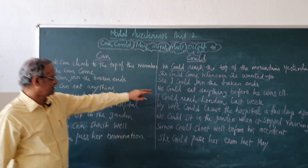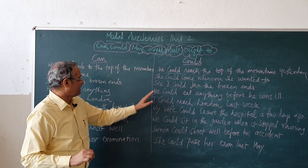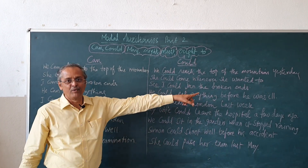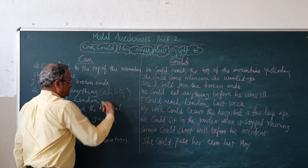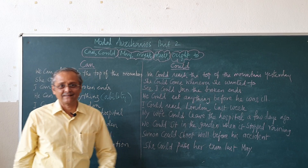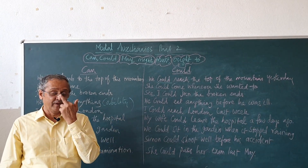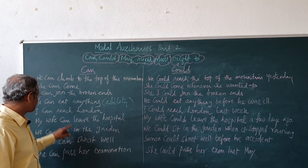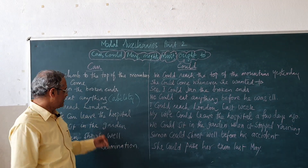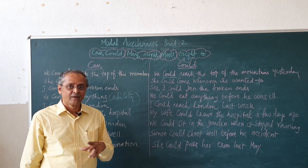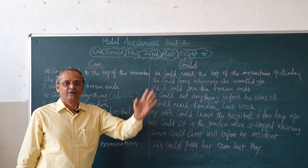'I can join the broken ends.' — 'I could join the broken ends' — if you have already joined them and you are showing someone, you use 'could'. 'He can eat anything' — ability. 'He could eat anything before he was ill' — the doctor said after he became ill he cannot eat certain things, but he could eat anything before. So we are expressing a past action. 'I can reach London' — 'I could reach London last week', past tense.